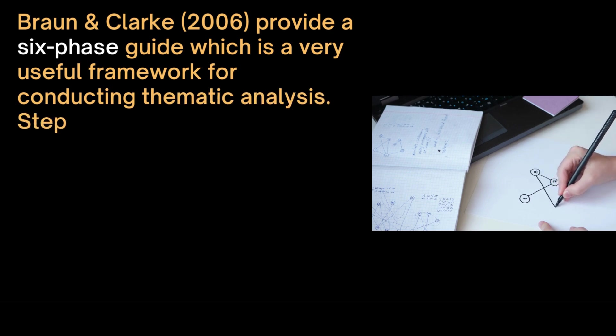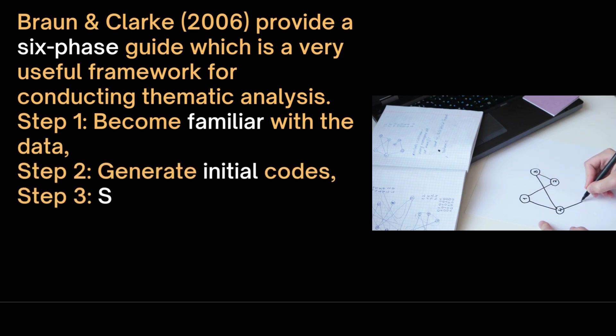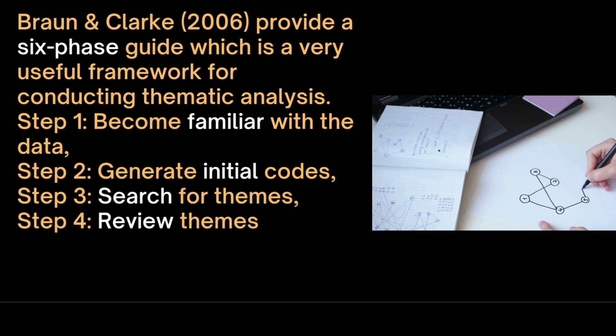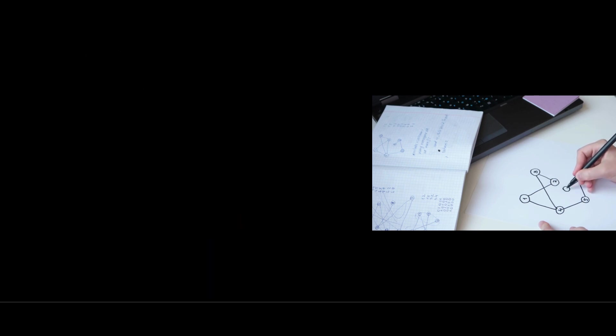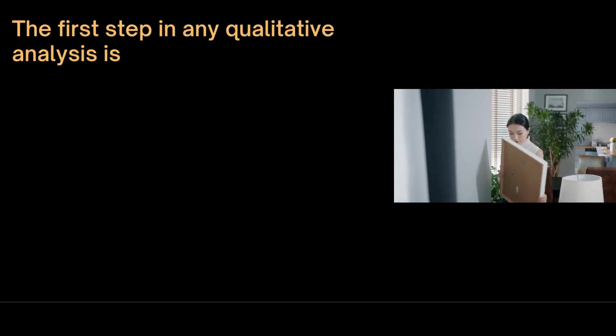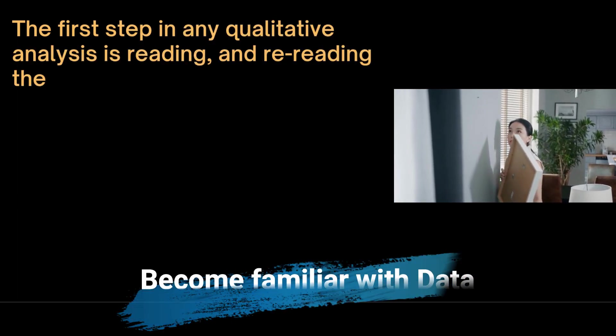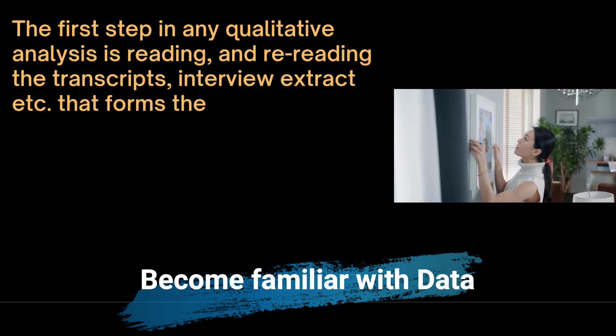In step one, we become familiar with the data. Step two generates initial codes. Step three searches for the themes. We review the themes in step four. Step five, we define the themes, and step six is about the write-up. The first step in any qualitative analysis is reading and rereading the transcripts, interview extracts, etc. that form the data.